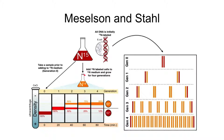E. coli grown on the normal light nitrogen produce lighter DNA containing the light isotope of nitrogen in the nitrogenous bases. The final component of the experiment was a system to separate DNA based on molecular mass — density gradient ultra-centrifugation. This machine spins samples very rapidly; within a solution, substances separate based on their density, with denser materials sinking further down and lighter materials remaining closer to the surface.